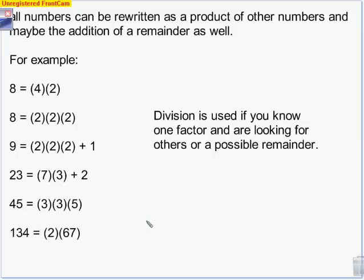Think about just basic numbers and writing the factors of basic numbers. For example, 8 is 4 times 2, but it could be further broken down — the 4 could be broken down to 2 times 2 times 2. 9 would be 2 times 2 times 2 plus a remainder of 1. 23 is 7 times 3 plus a remainder of 2. 45 is nice and perfect: 3 times 3 times 5. 134 would be 2 times 67. Division is used when you know one factor and you're looking for others, with a possible remainder.